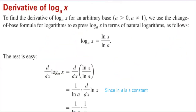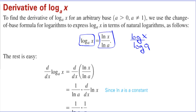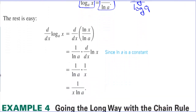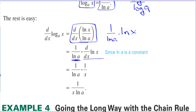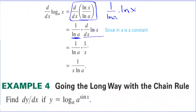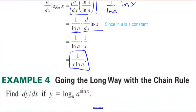Derivative of log base a of x: to find the derivative for any base a greater than 0 where a does not equal 1, we use the change of base formula to express log base a of x as natural log of x divided by natural log of a. This is really 1 over natural log of a times natural log of x — a constant times a function. The derivative of natural log of x is 1 over x, so the final result is 1 over x times the natural log of a.